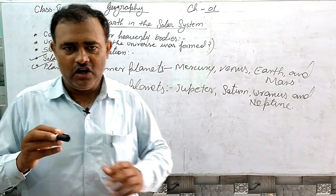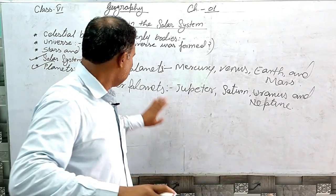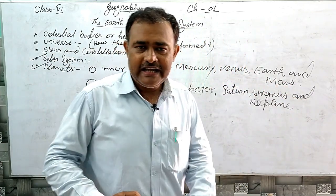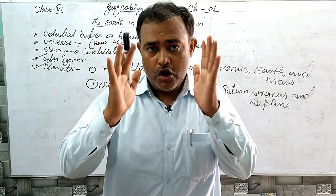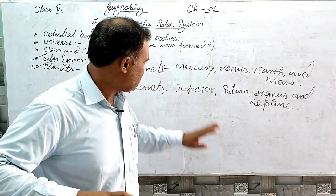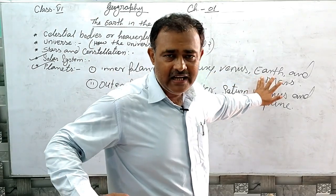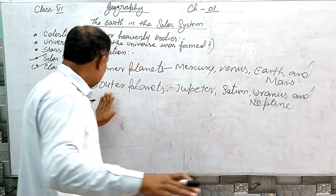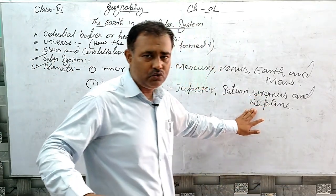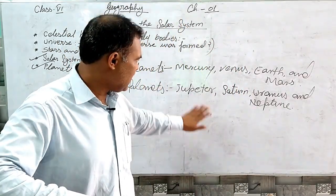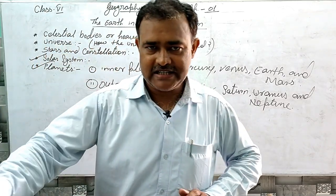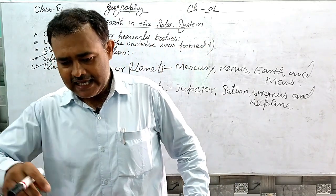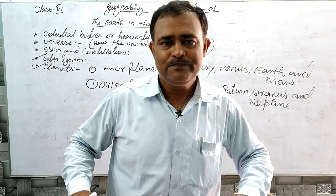Mercury, Venus, Earth, and Mars are called inner planets because they are formed from rock. Our Earth is the third planet — a rocky planet on which we live. The outer planets — Jupiter, Saturn, Uranus, and Neptune — are called outer planets because they are formed by giant gases. Today we will stop here. In the next sessions we will continue this chapter, covering rotation, revolution, satellites, and the Moon in detail. Thank you.